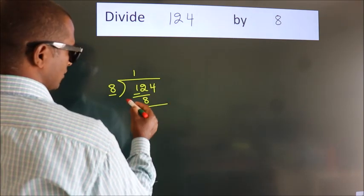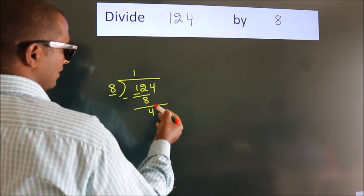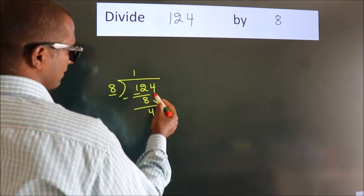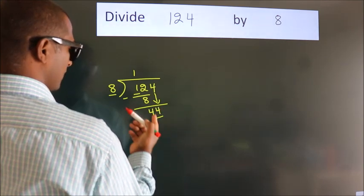Now we subtract and get 4. After this, bring down the next number beside it. So 4 down, making 44.